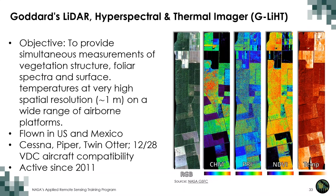I also want to mention another sensor: the Goddard's LIDAR Hyperspectral and Thermal imager, typically referred to as G-LiHT. Its objective is to provide simultaneous measurements of vegetation structure, foliar spectra, and surface temperature at very high spatial resolution on a wide range of airborne platforms. G-LiHT has been flown in the US and Mexico with Cessna, Piper, Twin Otter, and VDC aircraft compatibility, and has been active since 2011. Its data products include a true color image, a canopy height model, a photochemical reflectance index, a normalized difference vegetation index, and temperature.